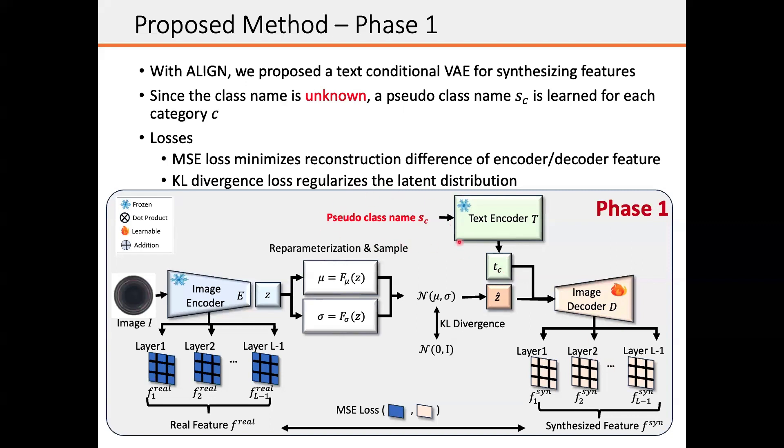Since the class name is unknown, we learn a pseudo-class name SC for each category C, and SC is a learnable parameter which optimizes together with the decoder. Overall, we use the MSE loss to minimize the reconstruction difference between the encoder feature and the decoder feature, and we also use the KL divergence loss to regularize the latent distribution.